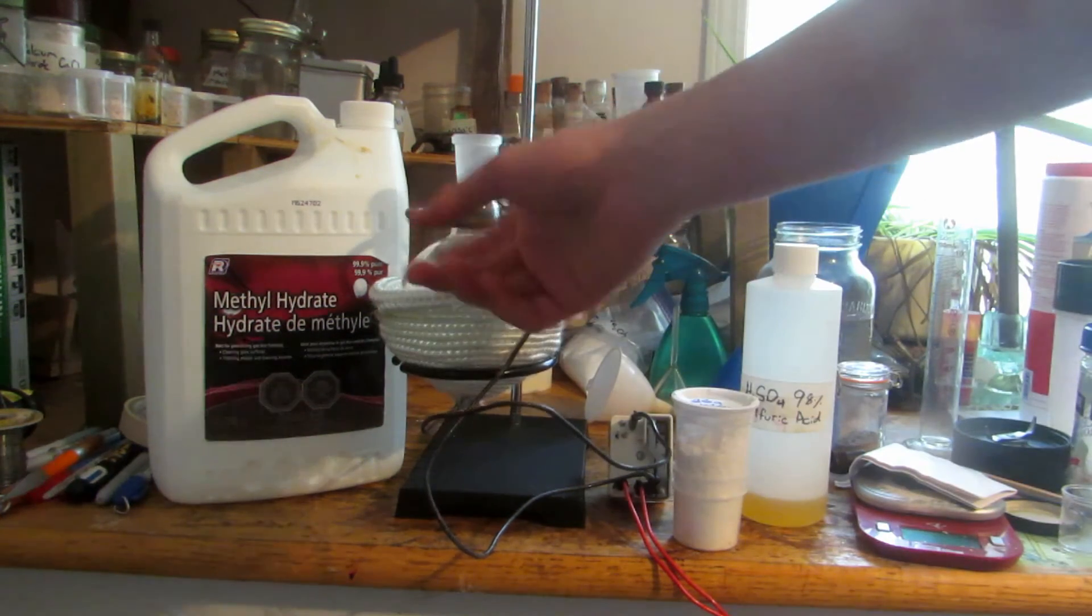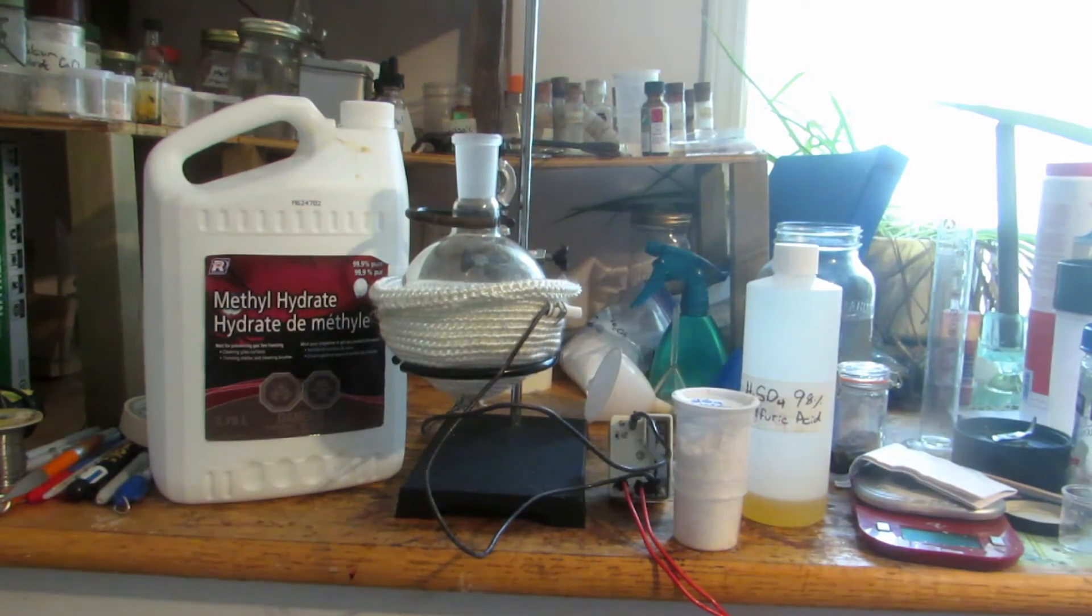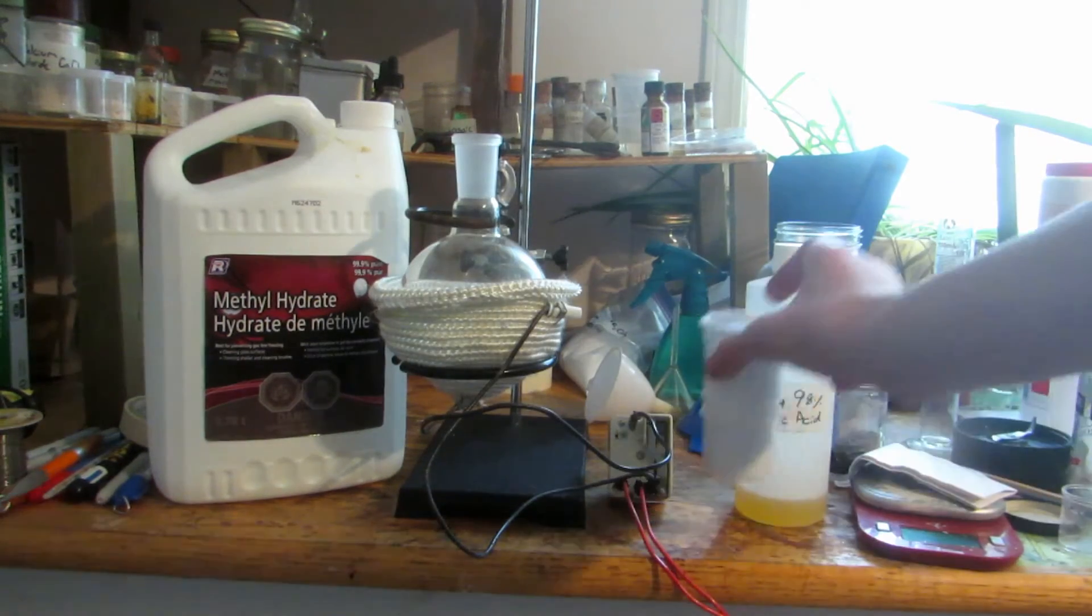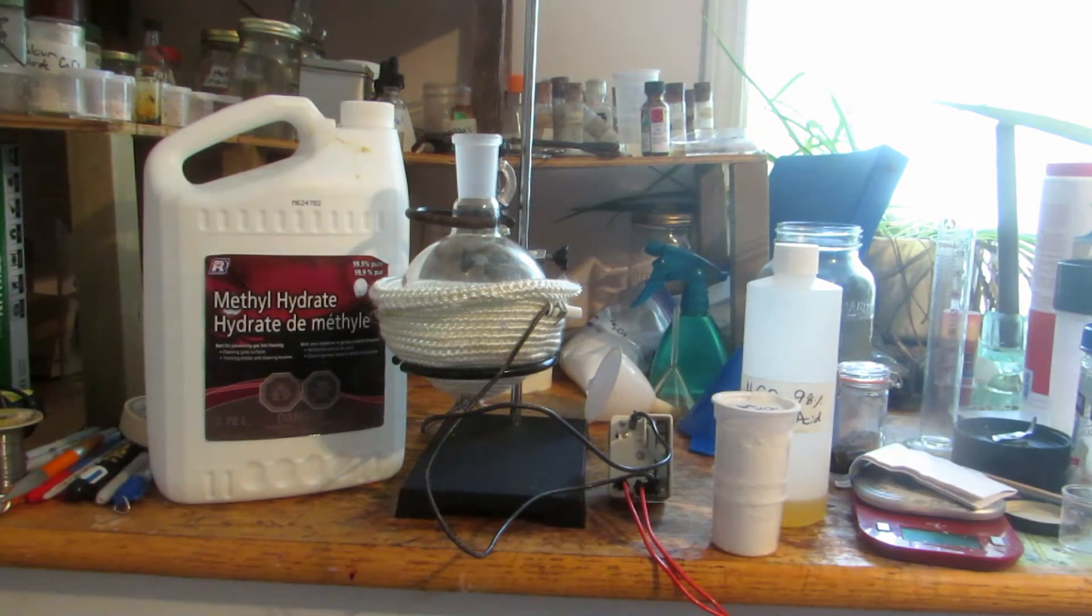We'll also need a 500ml round bottom flask and a heating mantle. The first thing to do is add 20 grams of salicylic acid into the round bottom flask, followed by approximately 100ml of methanol.